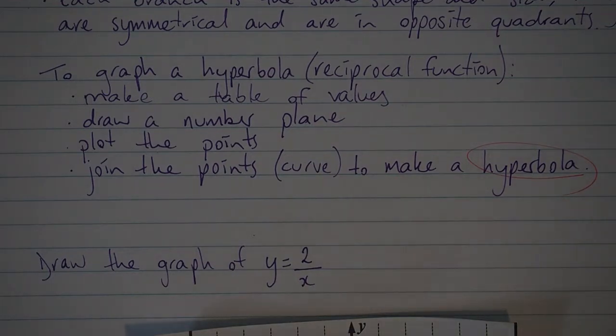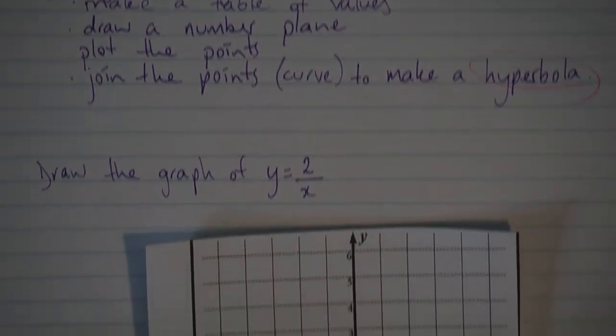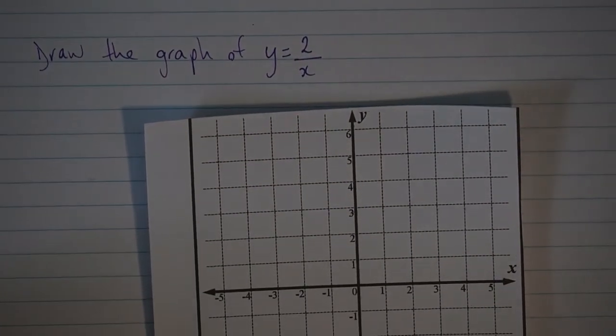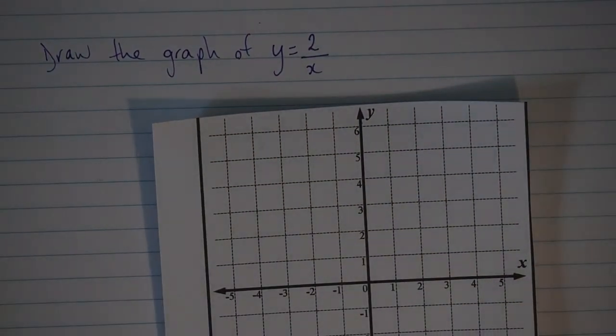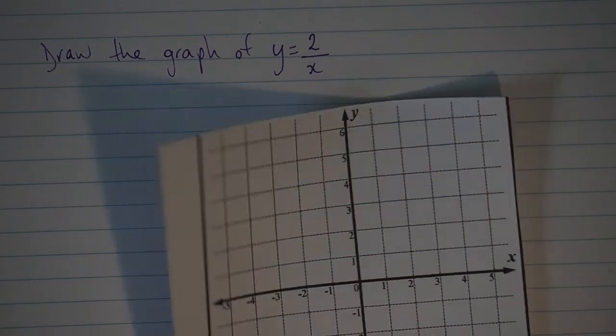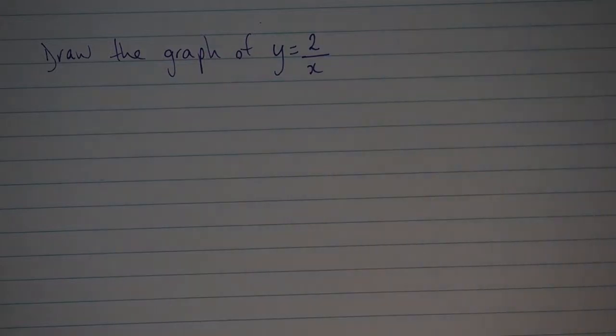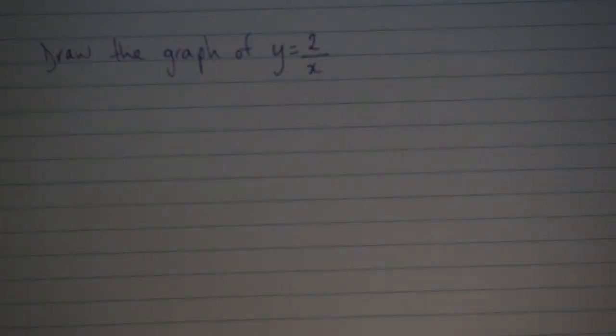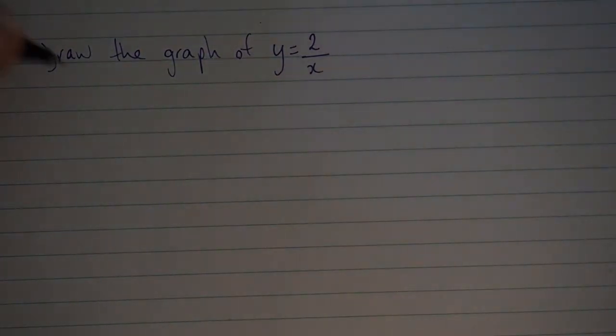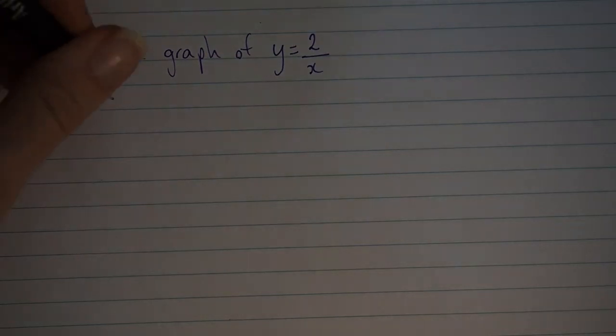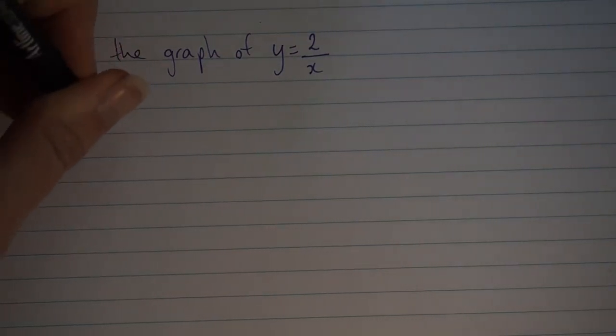If we have a look at our example, we've been asked to draw the graph of y equals 2 over x. That takes the form y equals k over x. In this case, our k value is simply 2. Following my steps, I'm going to make a table of values.